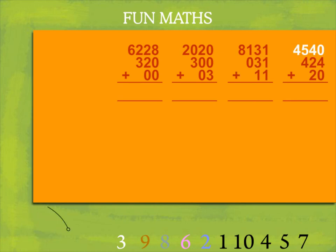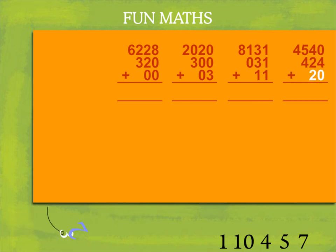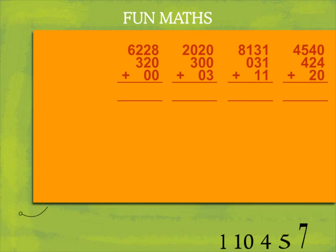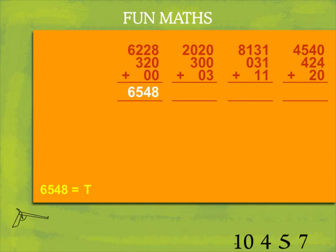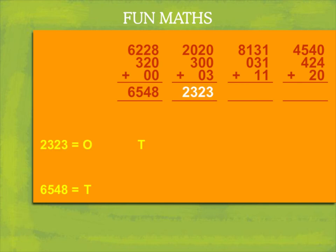21 plus 11, 4540 plus 424 plus 20. Let's add the ones, tens, hundreds, and thousands one by one. The first one adds up to 6548 and that is T. The second one adds up to 2323 and that is O.